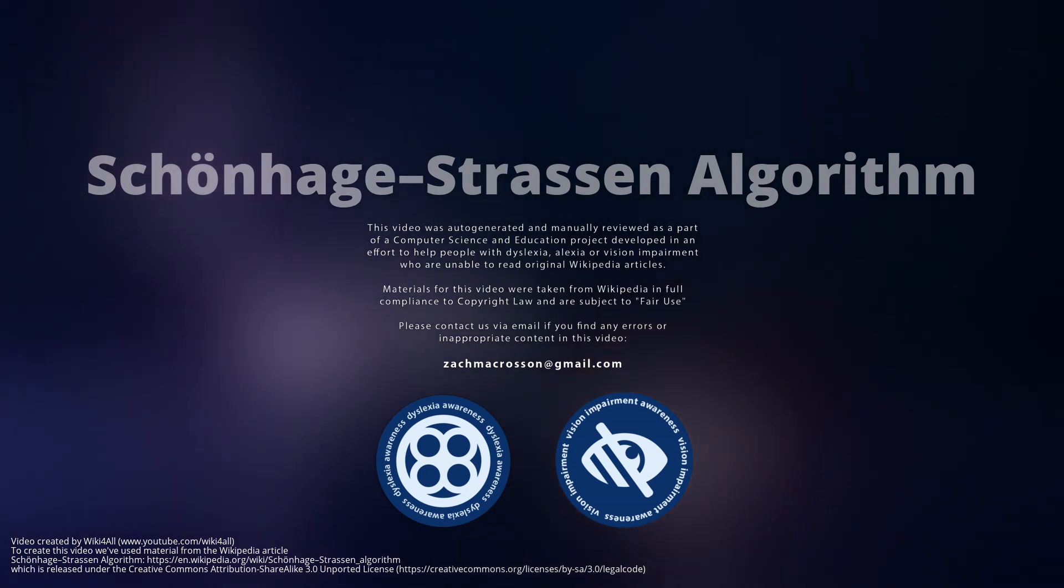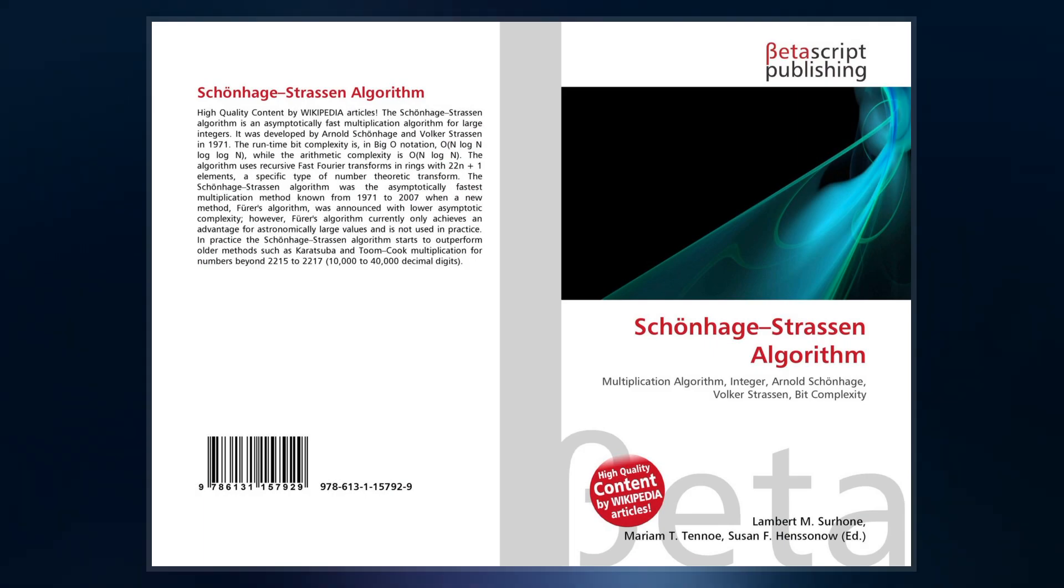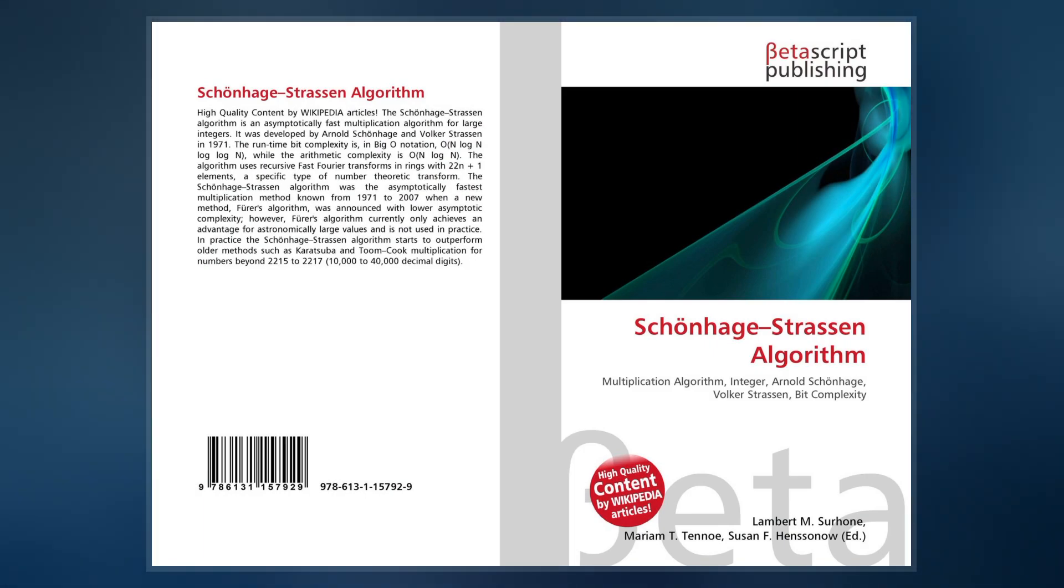The Schönhage-Strassen algorithm is an asymptotically fast multiplication algorithm for large integers. It was developed by Arnold Schönhage and Volker Strassen in 1971.